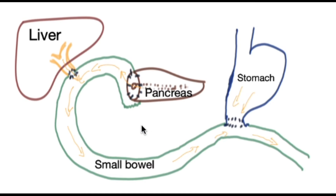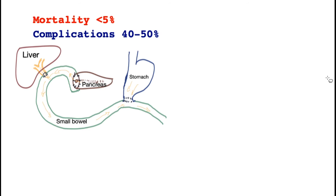This picture represents the new anatomy, where a loop of small bowel is brought forward and joined to the pancreas. The same loop is then joined to the bile tube, and further down it is joined to the stomach to restore continuity. In recent times the safety of the operation has improved tremendously, especially in experienced units.